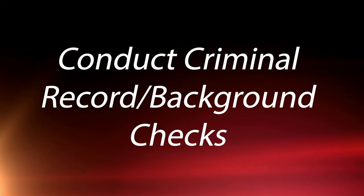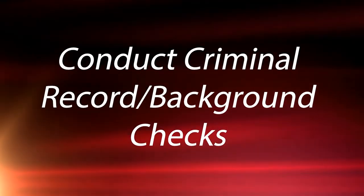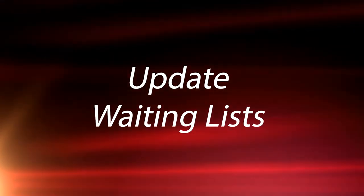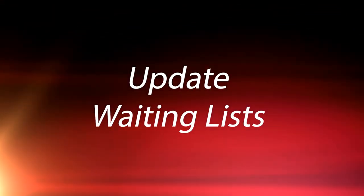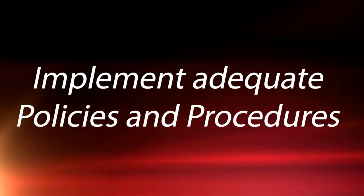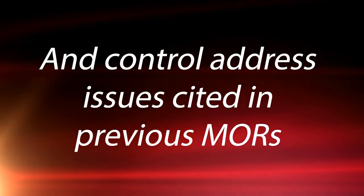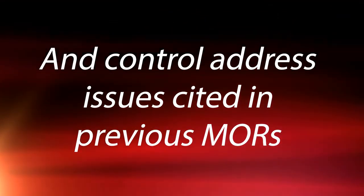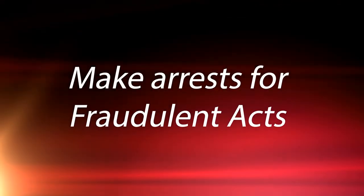You have to make sure that the person is eligible and that you're following the rules. OIG also requires things like conducting criminal records and background checks, updating waiting lists with necessary notations, and implementing adequate policies and procedures to address issues cited in your previous MORs.